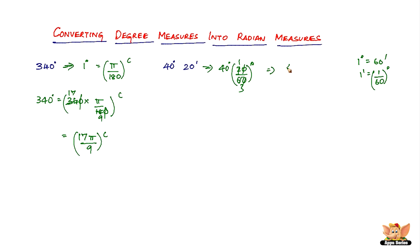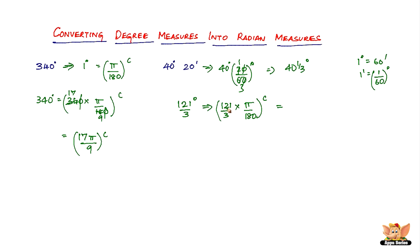That makes it 41/3 degrees. Converting to an improper fraction: 3 times 40 is 120, plus 1 is 121, giving us 121/3 degrees. Now multiplying by π/180 radians, there is no simplification, so we get 121π divided by 540. Therefore, 40 degrees and 20 minutes equals 121π/540 radians.